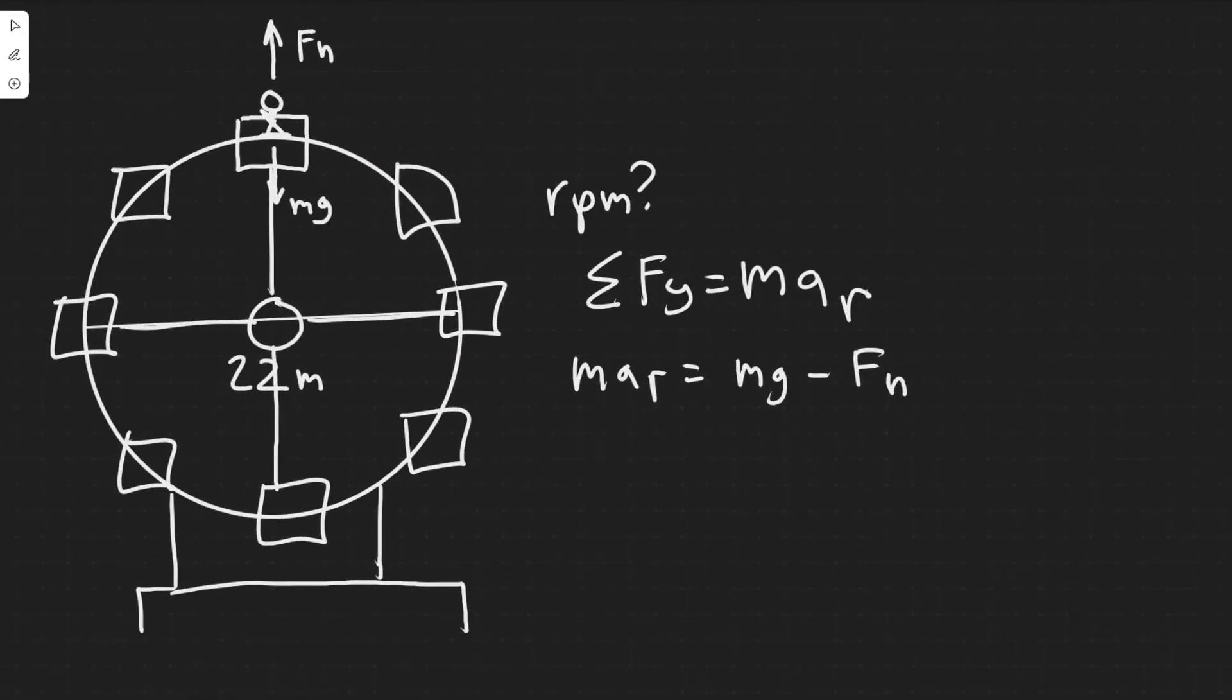So when we solve this problem, the normal force is going to be equal to zero. So this value is just going to be zero. So ma_r is going to be equal to mg here. But notice that a_r, or the centripetal acceleration, is equal to the velocity squared divided by the radius. So this is the ultimate reason why we're doing this, is we need to be able to find the velocity.